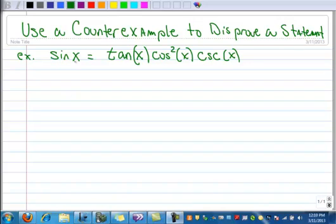In this example we want to use a counterexample to disprove this statement. So this looks like any identity that you have been proving, and I'm giving you one that's not an identity because the left hand side does not equal the right hand side. I'm just telling you that right off the start and we're going to prove this is not an identity.